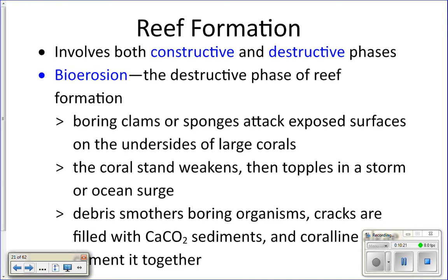The coralline algae takes all the sand, shells, and broken pieces of coral, grows over the top, and cements it all together. Now you have a new hard surface for another little coral larva to settle down and start growing into a new colony. Then boring organisms begin again, and you get layers and layers forming on top of each other as corals die, get broken down, get cemented together, and are built upon.